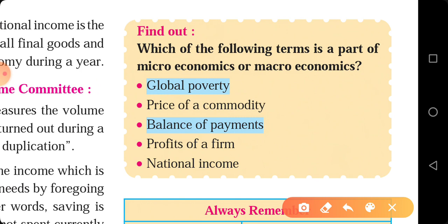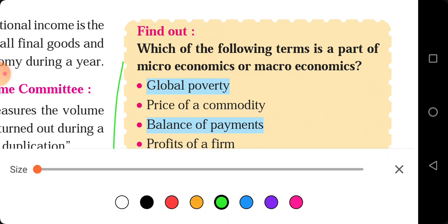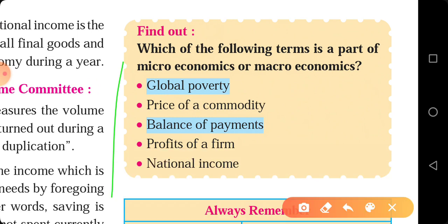We have seen that microeconomics studies at the individual level, whereas macroeconomics studies at the aggregate level. Let us see all the elements. Like global poverty — if you see, 'global' means the entire world, so it is not individual. That's why it comes under the category of macroeconomics.